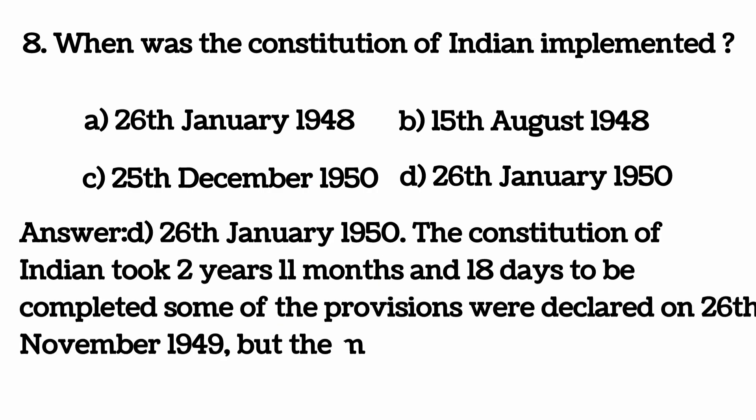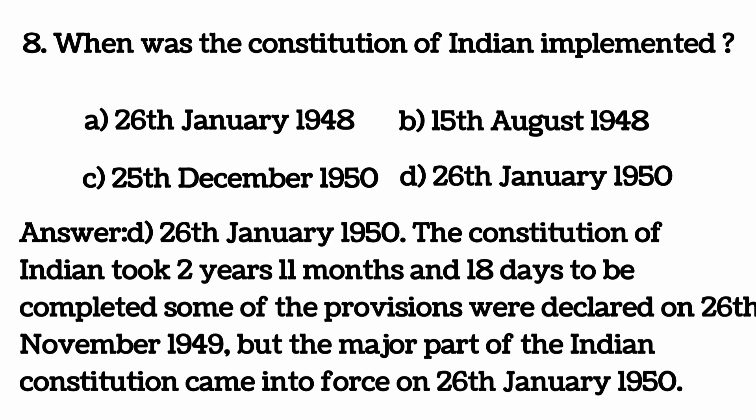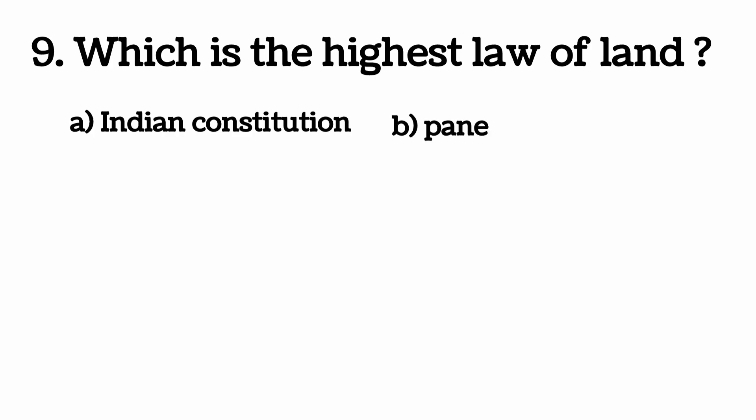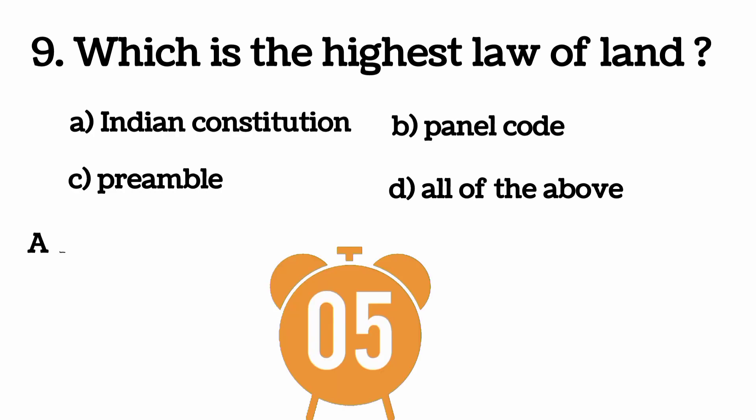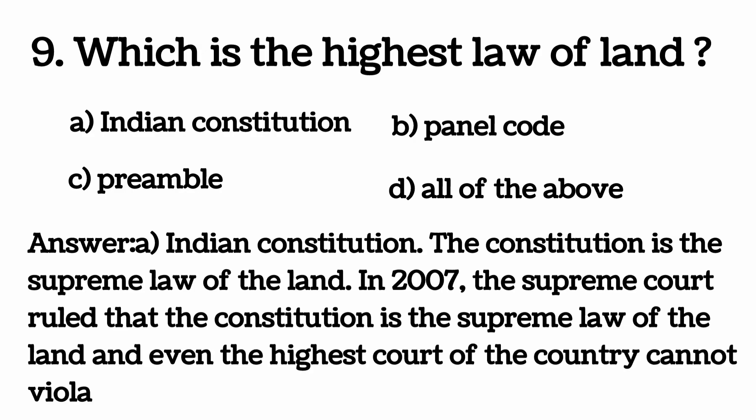Answer: 26 January 1950. The constitution of India took 2 years, 11 months and 18 days to be completed. The constitution is the supreme law of the land, and even the highest court of the country cannot violate it.